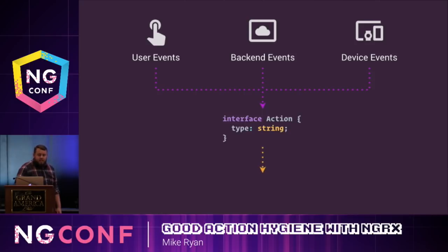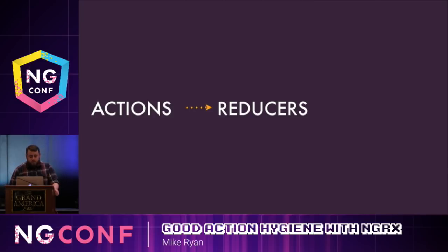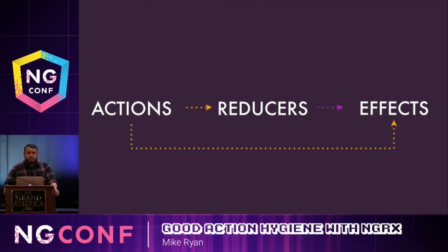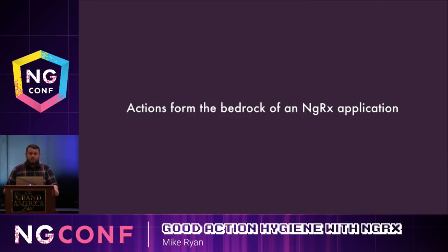These actions are collected and they form what's called a global unified action stream. With this action stream, we pass them to reducers. Reducers decide how state transitions as a result of an action. From there, actions and state get delivered to effects. Effects can start the process of integrating with your back-end APIs or browser APIs, and effects can then dispatch more actions into the system. Really, you could say that actions form the bedrock of an NGRX application — they are the inputs and outputs of so many systems in NGRX.